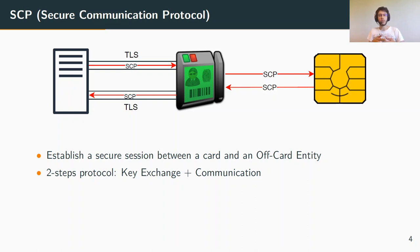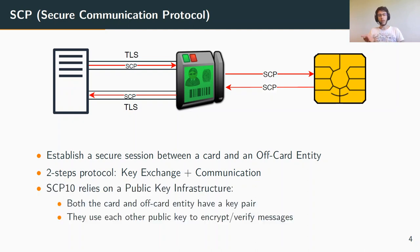All three versions are strongly based on symmetric cryptography, meaning pre-shared keys need to be manually deployed on the smart card beforehand. SCP-10 has the particularity of relying on public key infrastructure — both the card and the off-card entity will have a key pair with a public and private key, and they will use each other's public key during the key exchange step in order to encrypt and verify messages.